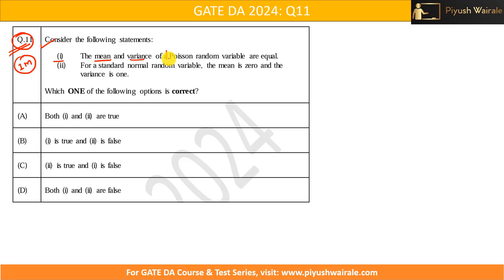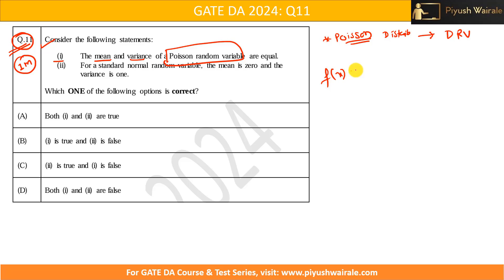The question says: consider the following statements. The first statement is that the mean and the variance of a Poisson random variable are equal. We should know what the Poisson distribution is and the probability mass function related to it. The Poisson distribution is related to discrete random variables, and the probability mass function f(x), or P(X = x), is given by: lambda to the power x, times e to the power minus lambda, divided by x factorial.